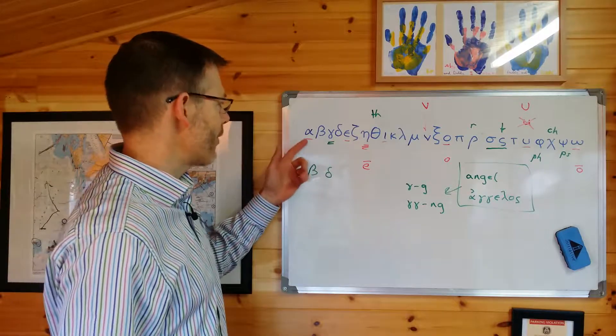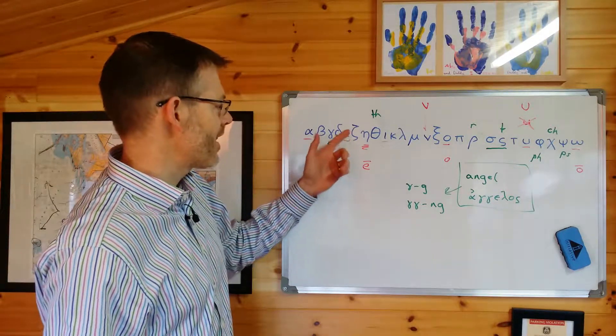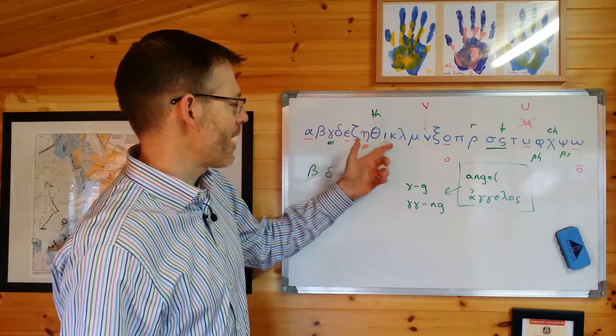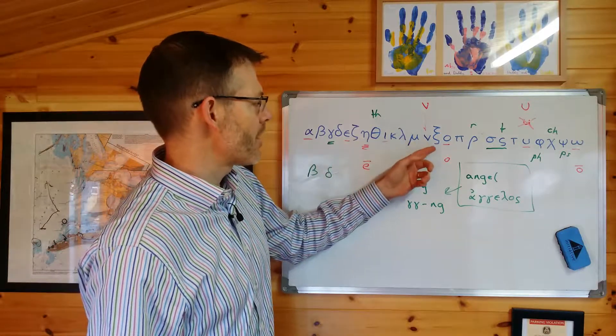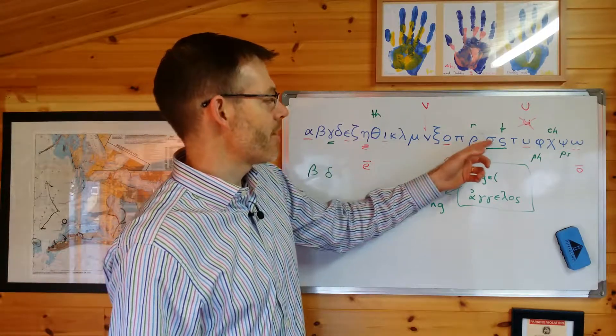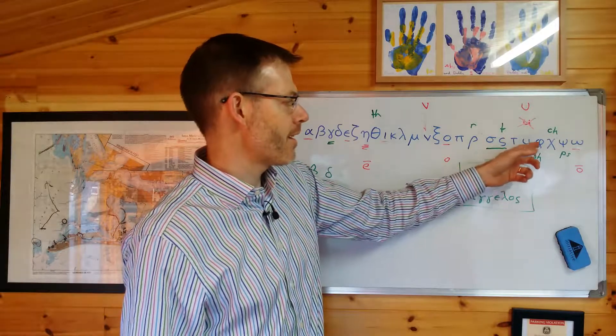Okay, here goes with the letters of the alphabet. Alpha, beta, gamma, delta, epsilon, zeta, eta, theta, iota, kappa, lambda, mu, nu, xi, omicron, pi, rho, sigma, sigma again, tau, upsilon, phi, chi, psi, omega.